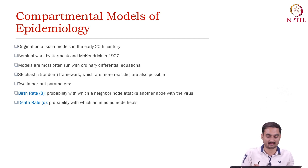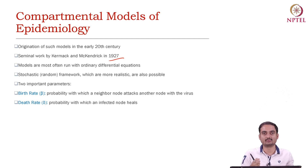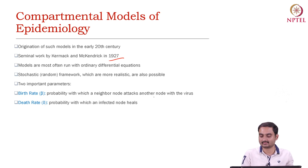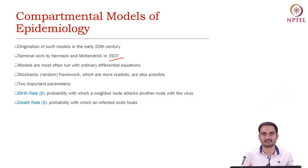The fundamental idea behind the model that we discussed is basically that we will use some probabilities. The first probability is called the birth rate, which is basically the probability with which a neighbour node attacks another node with the virus. This is the birth rate of the virus, also called the infection rate. With probability beta, a node will infect another node.